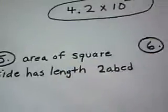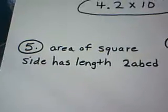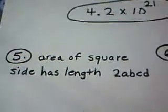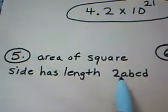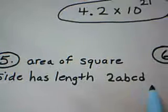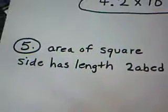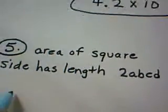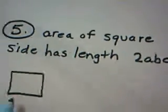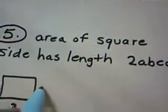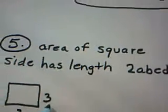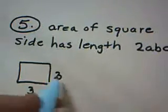Question number 5 is a geometry question, and it asks us to find the area of a square if one side of the square has length 2abcd. Now, remember just with a simple problem. If I gave you a square, and I told you that each dimension was 3, then to get the area, you're going to multiply 3 times 3, which is going to get me 9 square units.